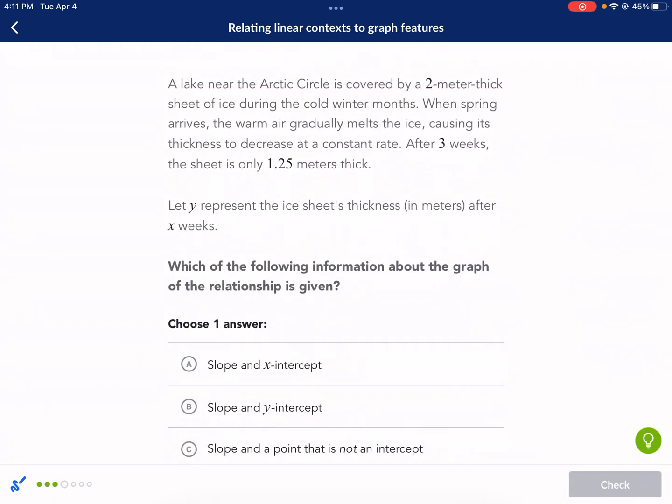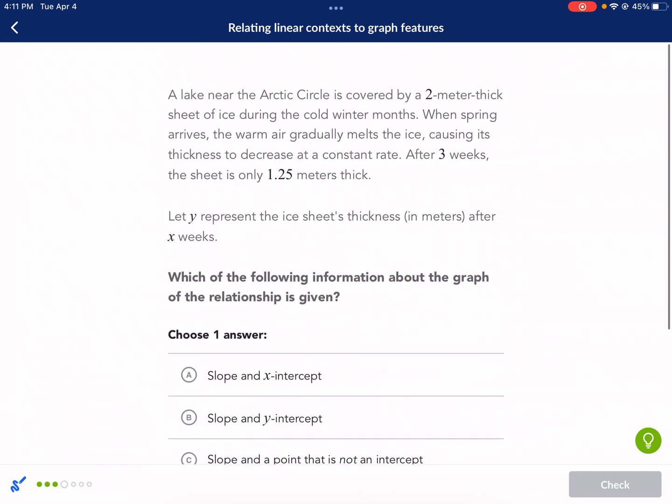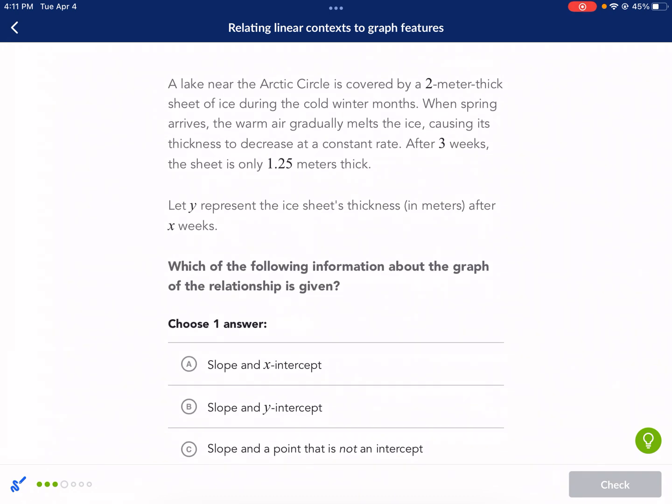Last question. Oh, we're not on to the last question. We have a lot more questions to go. All right. We're going to try to pick up the pace here. A lake near the Arctic Circle is covered by a 2-meter-thick sheet of ice during the cold winter months. When spring arrives, the warm air gradually melts the ice, causing its thickness to decrease at a constant rate. After three weeks, the sheet of ice is only 1.25 meters thick. Let Y represent the ice sheet's thickness after X weeks.